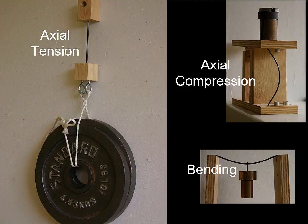The three most common types of structural action are tension, compression, and bending. The first image shows a 1/8-inch diameter piece of plastic welding rod about 6 inches long. It's in tension, and you'll notice it's holding a substantial amount of weight — in this case, 20 pounds.